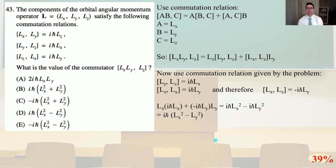Number 43. The components of the orbital angular momentum operator L equals (L_x, L_y, L_z) satisfy the following commutation relations: [L_x, L_y] = iℏ L_z; [L_y, L_z] = iℏ L_x; [L_z, L_x] = iℏ L_y. What is the value of the commutator [L_x, [L_y, L_z]]?